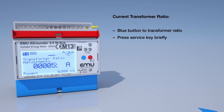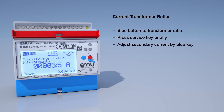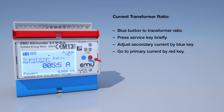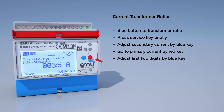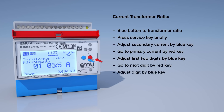Now use the blue button to select the secondary current at 5 or 1 ampere. Use the red button to switch to the primary current. The blue button now enables you to change the first two numbers. The red button continues on to the next step where you can adjust the numbers with the blue button.